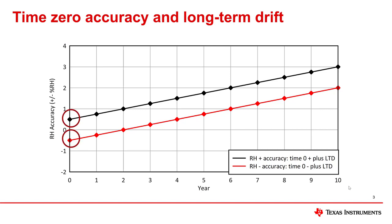The effect of long-term drift on a humidity sensor's accuracy is also seen in this graph, as the relative humidity accuracy deviates each year from the time zero value. As the sensor lifetime increases, the long-term drift begins to affect the initial time zero accuracy. Long-term drift is specified in datasheets as the percent relative humidity drift per year over the lifetime of the part. This lifetime drift assumes normal operating conditions and is not associated with drifts due to harsh environments or contaminants.